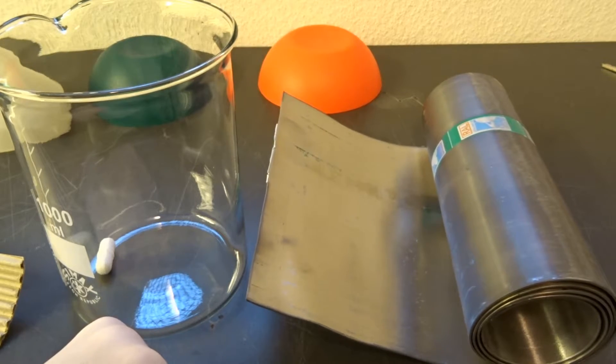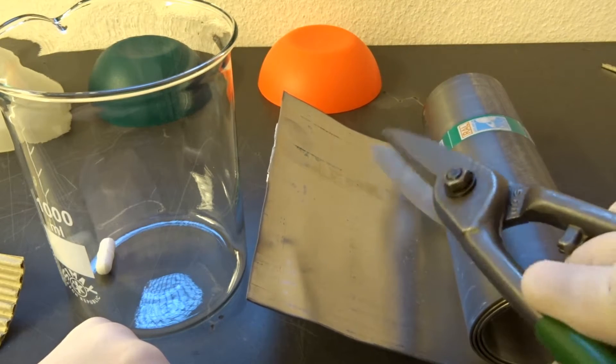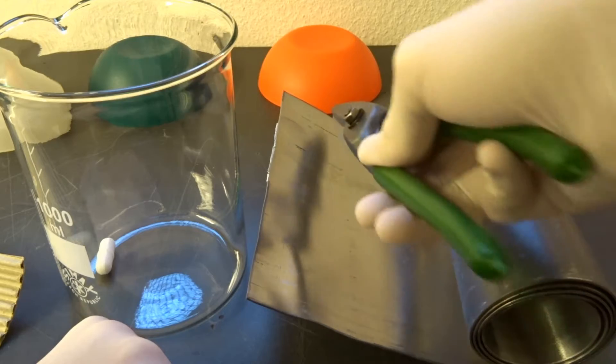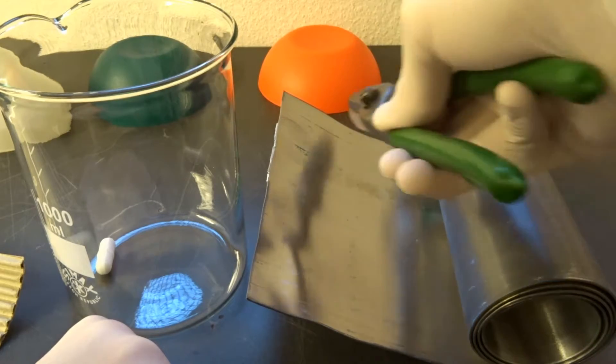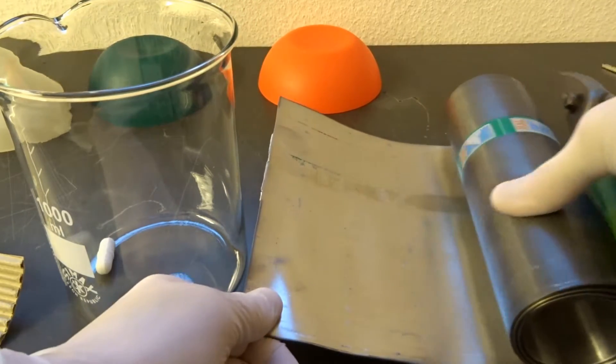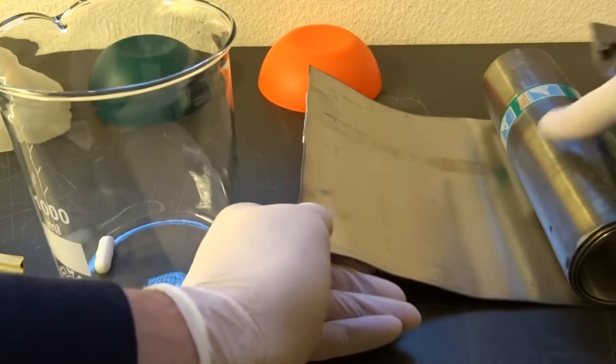I just need to cut strips using tin snips in the right size to fit into the beaker and be good electrodes. So that's what I'm going to do now.